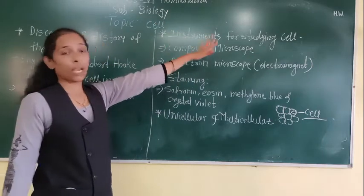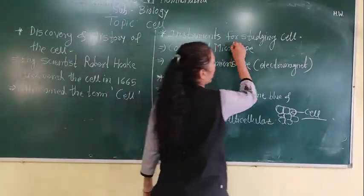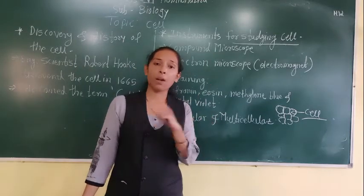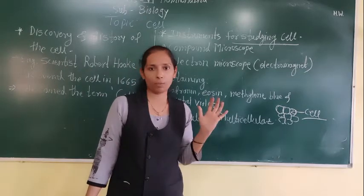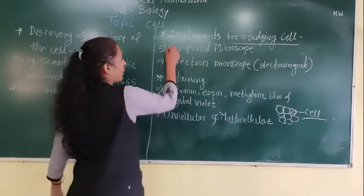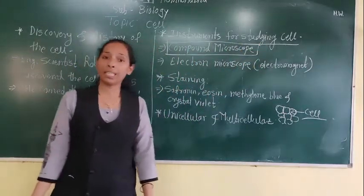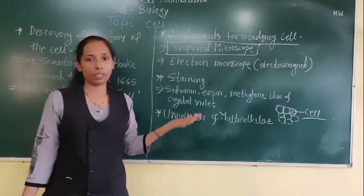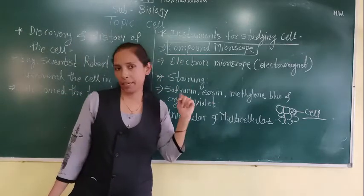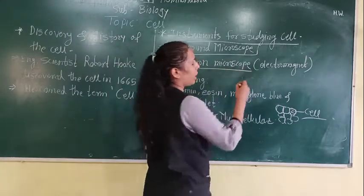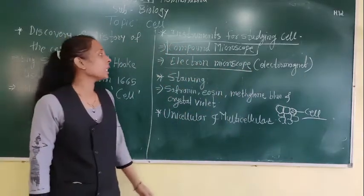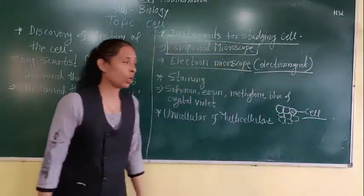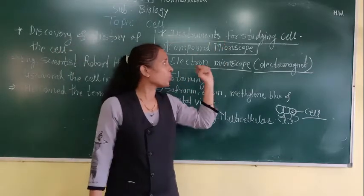Now we will discuss the instruments we have to use to study the cell. Cells are the very smallest particles of our body — very minute. So to observe them, we have to use a microscope, which makes them a microscopic part of the body. Generally, we use a compound microscope in the science laboratory, and it works on lenses and visible light. But if you want high resolution and want to observe each and every organelle of the cell, then we have to use an electron microscope, which uses electromagnets. These are the instruments used for studying the cell.